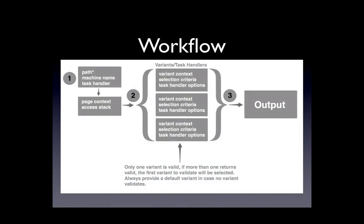If we want to talk about the workflow for just a second: as I've mentioned in step one, our various plugins handle these portions for us. We define the path, we define a machine name, and an initial task handler. So we could be saying we want to create a panel at the path 'test' and give it a machine name of 'test'. Then there's page context — typically this is just arguments we might pull from our path, so if we're not pulling any, there won't be any. But the access stack can either use context or not depending on whether we have it. We'll always have a global user — who is the current user in that access stack — so we can check whether they're a member of a particular role or whether they have a particular permission.